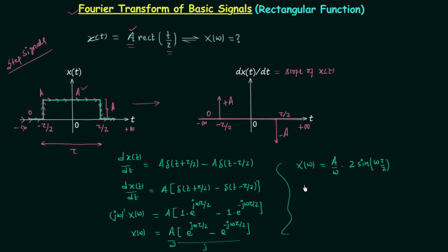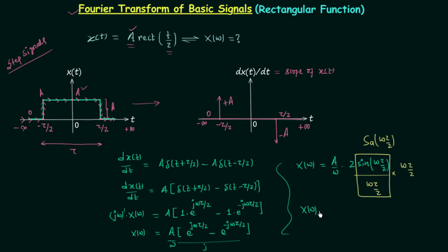To write X(omega) in terms of the sampling function, we divide and multiply by omega tau by 2: sin(omega tau by 2) divided by (omega tau by 2) equals sinc(omega tau by 2). So X(omega) equals A tau times sinc(omega tau by 2), since the omega terms cancel and the factors of 2 also cancel. This is the final result — the Fourier transform of the rectangular function.